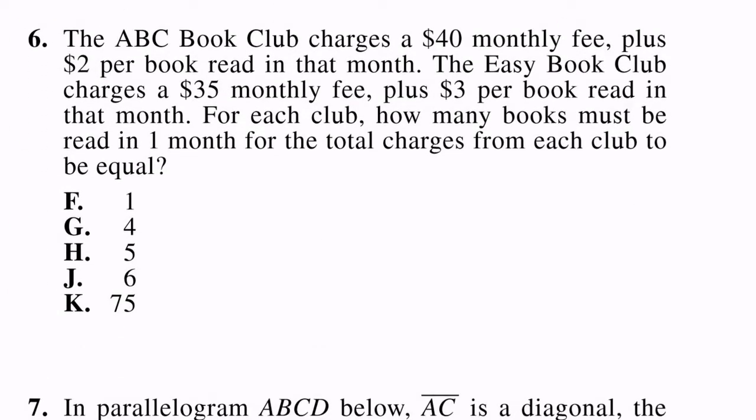Number 6, the ABC Book Club charges a $40 monthly fee plus $2 per book read in that month. The Easy Book Club charges a $35 monthly fee plus $3 per book read in that month. For each club, how many books must be read in one month for the total charges from each club to be equal? So this question we're going to have to come up with two different equations, one for the ABC Book Club and one for the Easy Book Club, and we're going to have to set them equal to each other.